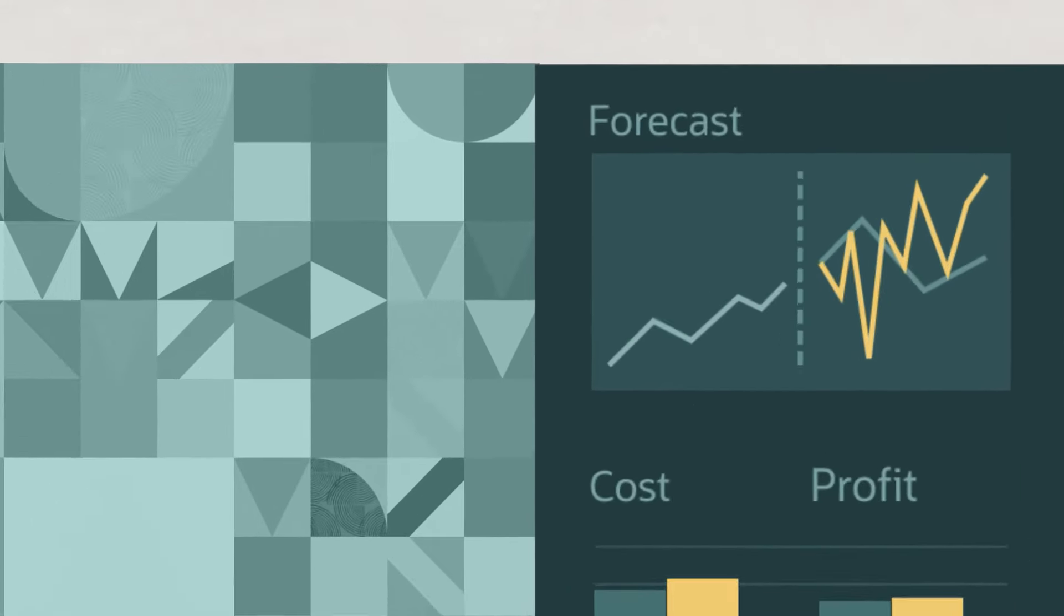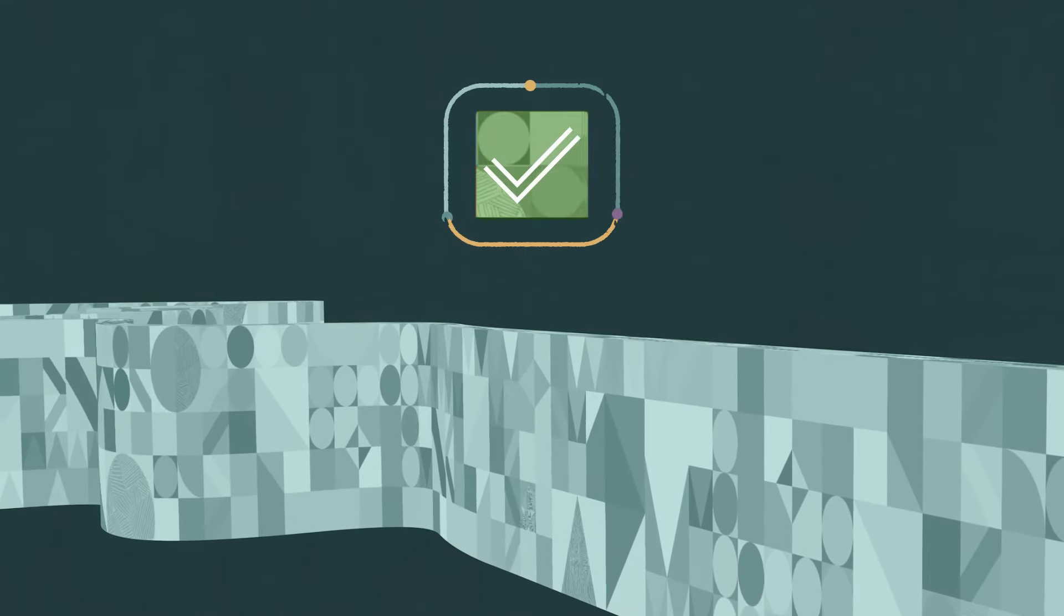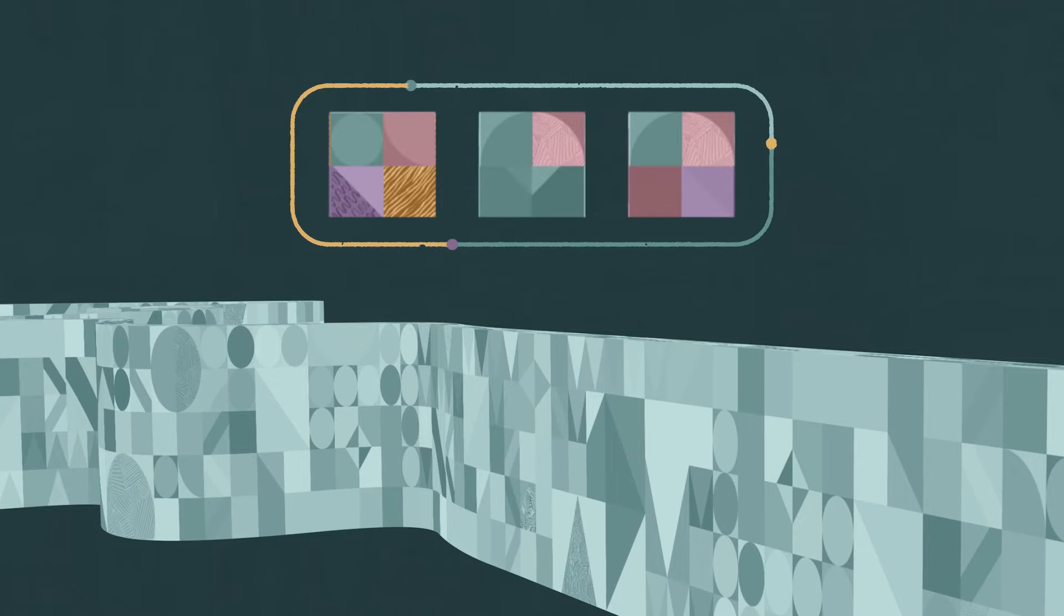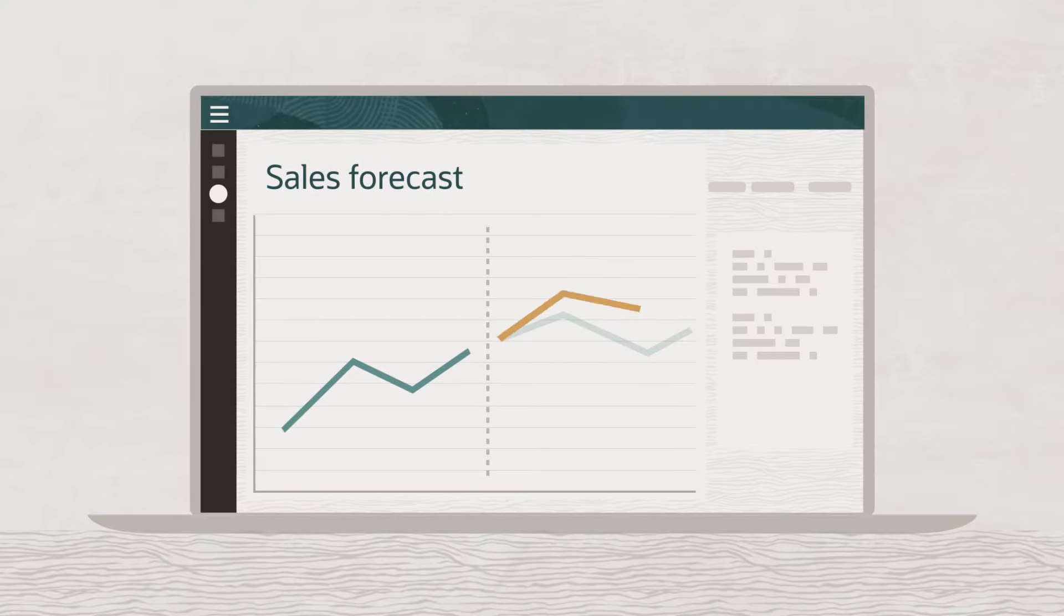Built-in machine learning helps identify correlations and trends in the data. For example, it can detect human bias in a sales projection and help improve sales forecast accuracy.